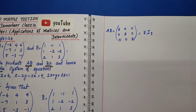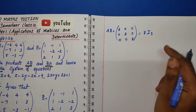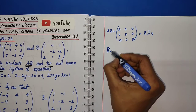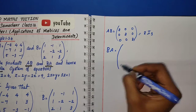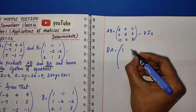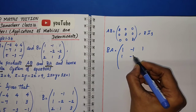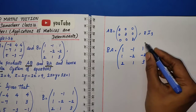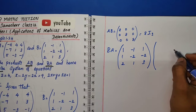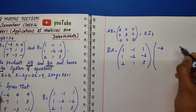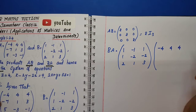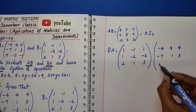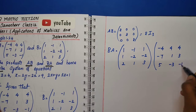So AB equals 8I₃. Now we calculate BA. Matrix B is 1, minus 1, 1, 1, minus 2, minus 2, 2, 1, 3 multiplied by matrix A: minus 4, 4, 4, minus 7, 1, 3, 5, minus 3, minus 1.